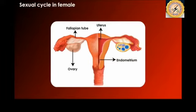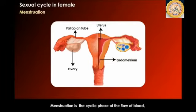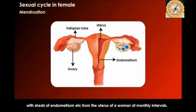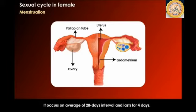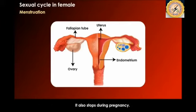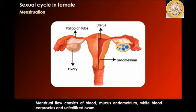The sexual cycle in females is known as the menstrual cycle or menstruation. It is a cyclic phase of blood flow which involves the shedding of the endometrium — the inner wall of the uterus — at monthly intervals. It occurs on an average cycle of 28 days and lasts about four days. It starts at the age of 12 to 14, which is the puberty stage, called menarche, and stops at age 45 to 50, called menopause. The menstrual flow consists of blood, mucus, endometrium, white blood cells, and the unfertilized ovum.